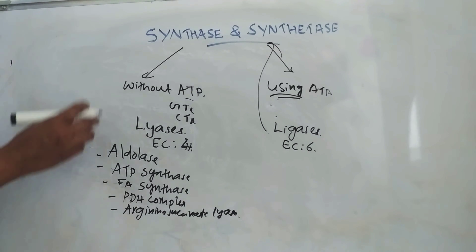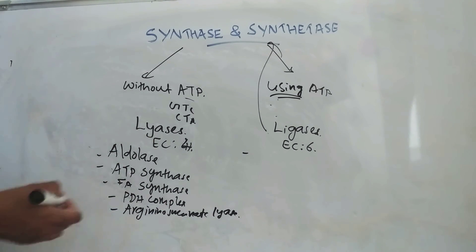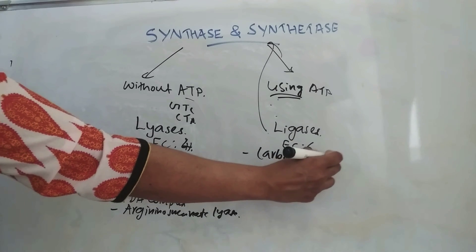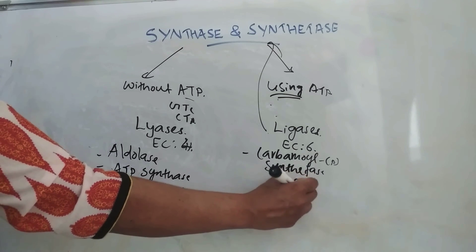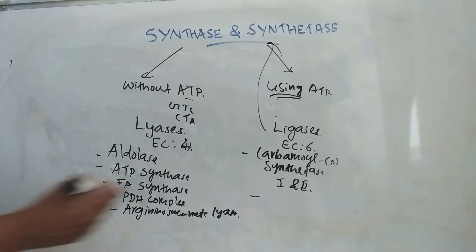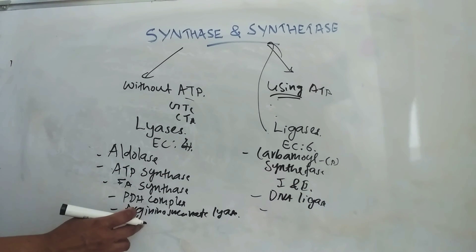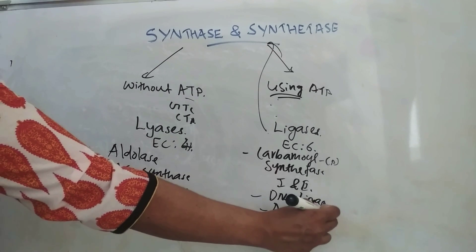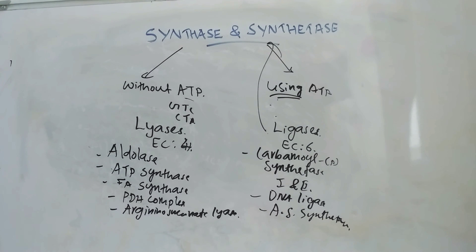These are common examples of synthase enzymes. Coming to synthetases, examples are carbamyl phosphate synthetase 1 and 2, DNA ligase, and arginosuccinate synthetase. These are the common examples of synthase and synthetase enzymes. This is today's topic. Thank you for watching.